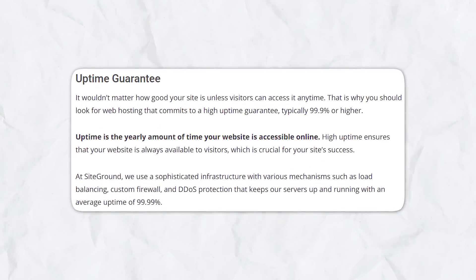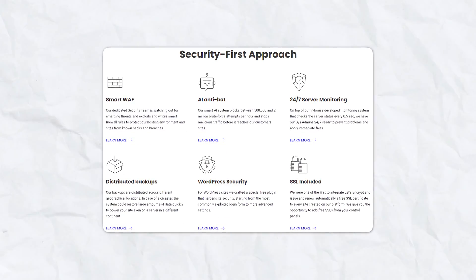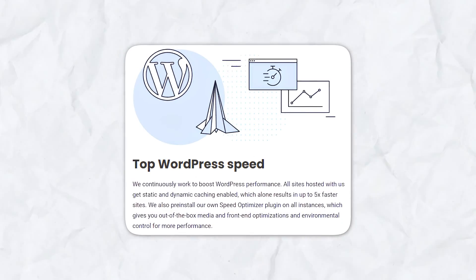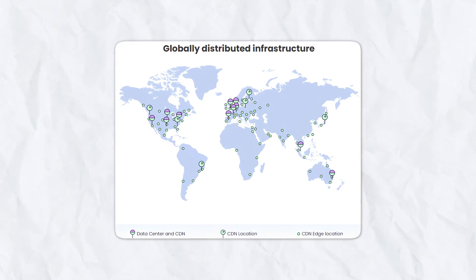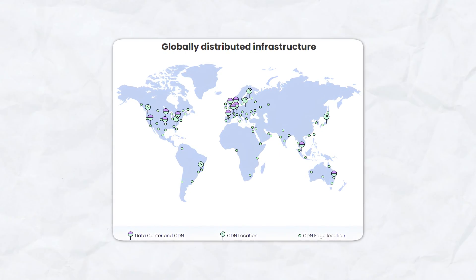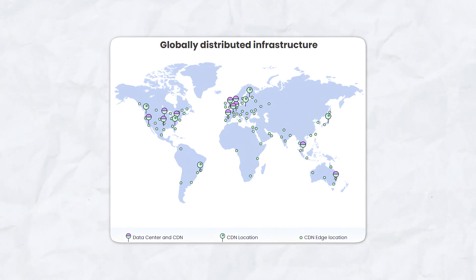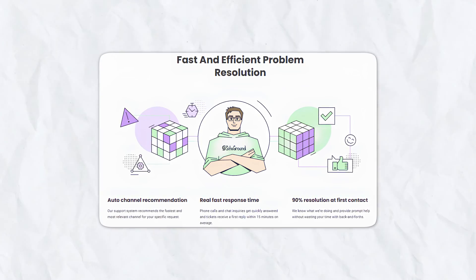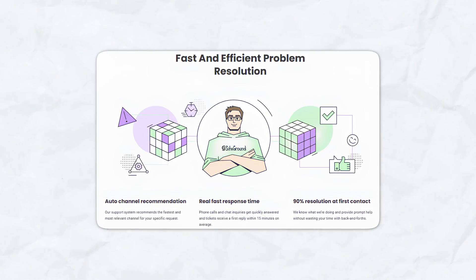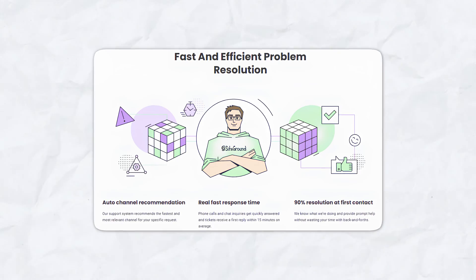Let's talk about some of the pros of using SiteGround. The first one is high reliability — nearly perfect uptime and great security features are always going to be a plus. Number two is that they're optimized for WordPress and are actually recommended by WordPress.org. They also have a global infrastructure with data centers all across the globe, which means they're optimized for the traffic to your area. And lastly, with their 24/7 customer support team that's knowledgeable and super quick, you're not going to go wrong with SiteGround.